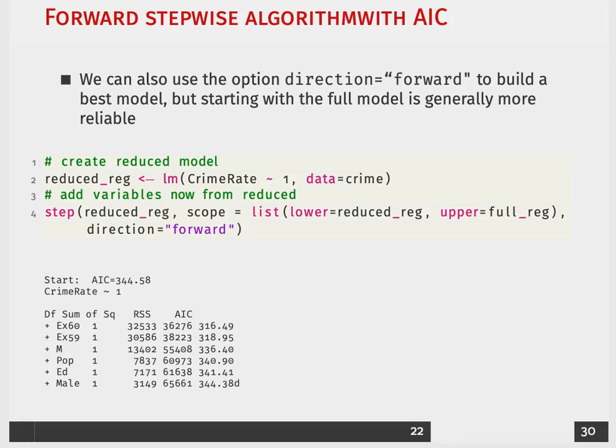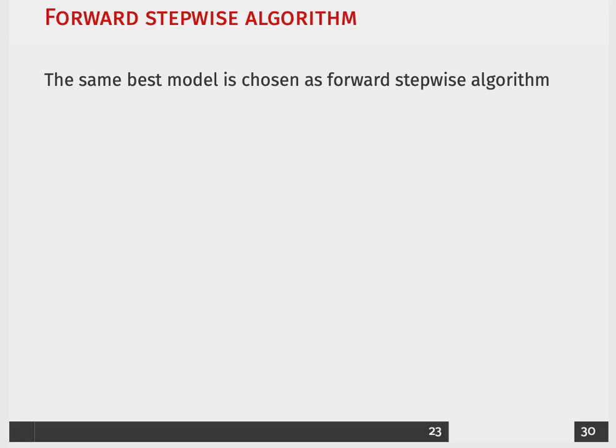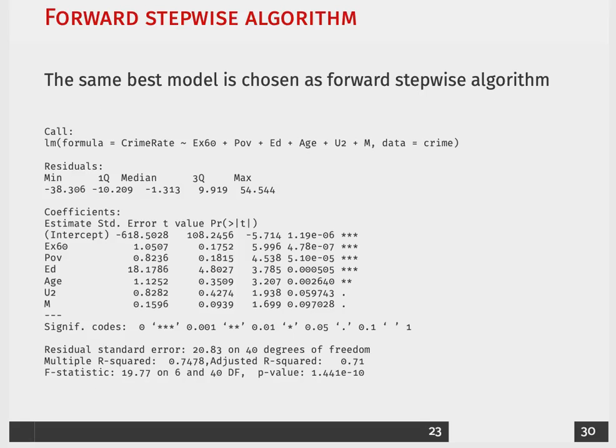When you run this in R, you'll get the exact same thing. What's interesting is that the same best model we chose using backward selection with the AIC is exactly the same model we selected using forward selection.